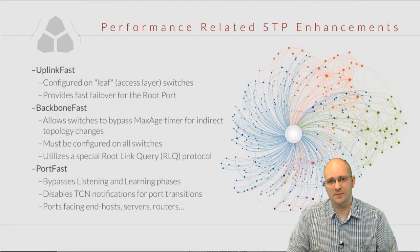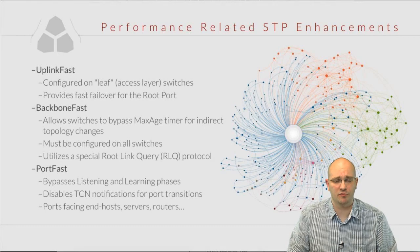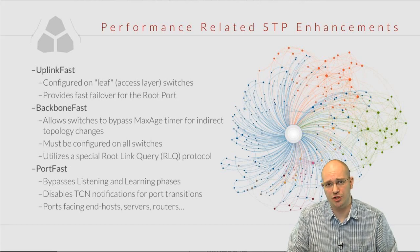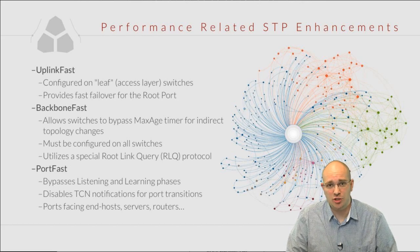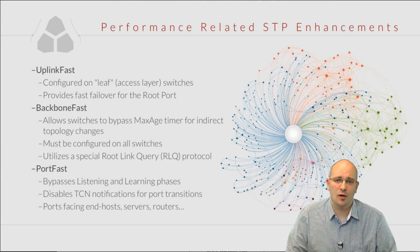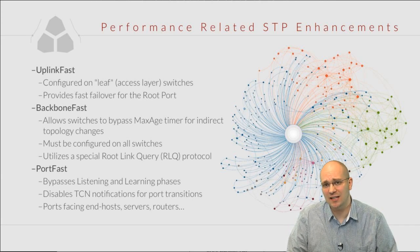The performance related Spanning Tree enhancements are uplink fast, backbone fast and port fast. Uplink fast is a feature that is designed to optimize the convergence for the switches that we call the leaf switches — the switches that have uplinks to the distribution layer. This is usually applied on the access switches. With this feature we provide a fast failover in a case of loss of BPDUs from a root port.